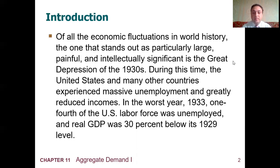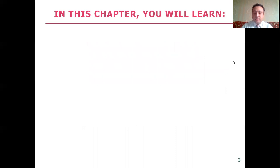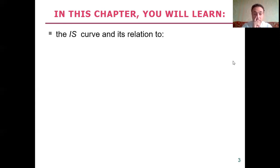This is one of the worst economic fluctuations in world history — an example to know what we are talking about when discussing economic fluctuations, increasing unemployment, decreasing GDP and income. In this chapter, we will talk about economic fluctuations in detail.